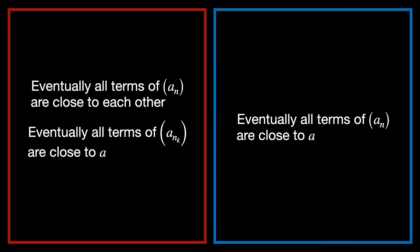At this point, the overall strategy of the proof should make sense. Listen carefully. If all the terms of the subsequence get closer to the number a, and if all the terms in the full sequence get close to each other, because it's Cauchy, then that means any term in the full sequence will eventually be close to some term in the subsequence. And since that subsequence term is already close to a, the original term must be close to a as well.